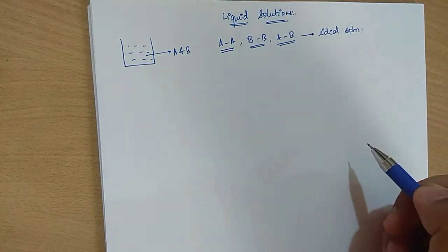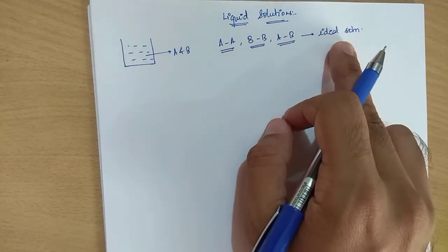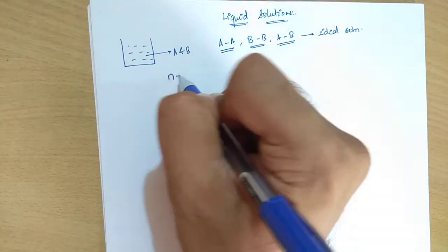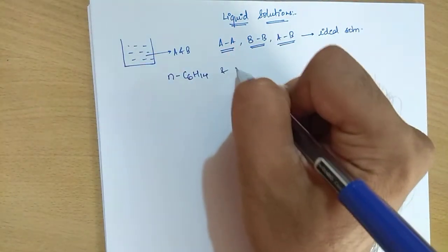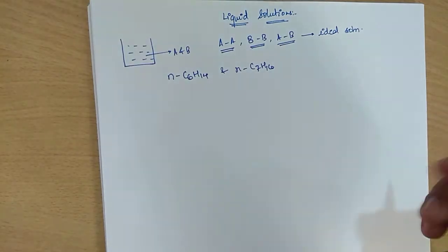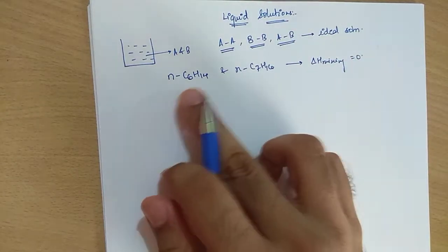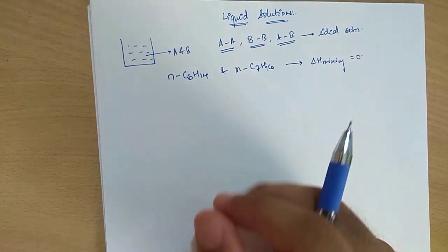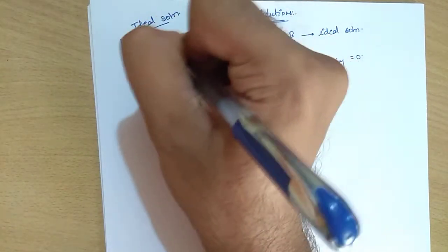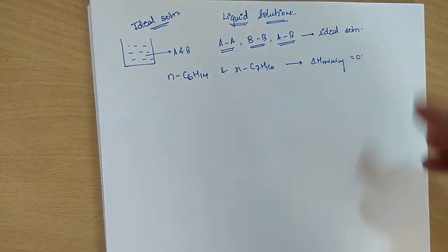Ideal solutions have some properties. When you mix two ideal liquid components — for example, n-hexane (C6H14) and n-heptane (C7H16) — what you realize is that delta H of mixing is zero. That means when you mix them, the process is neither exothermic nor endothermic. For ideal solutions, delta H of mixing is equal to zero.